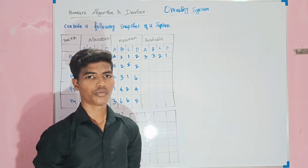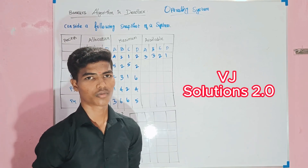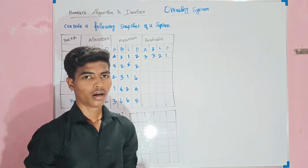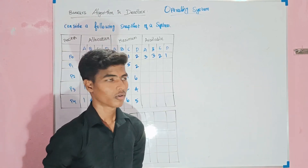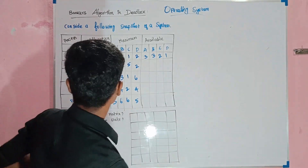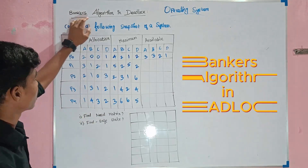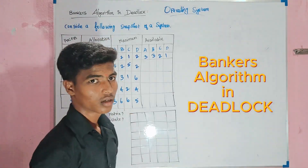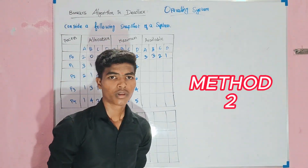Hello friends! Welcome to VJ Solutions. Today we are going to find out the Banker's Algorithm in Deadlock, Method 2.